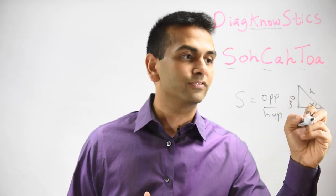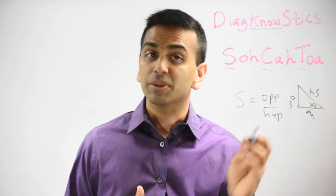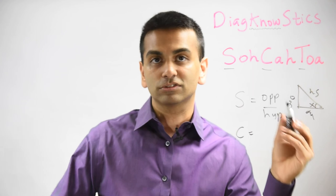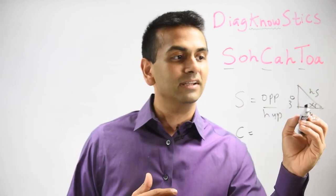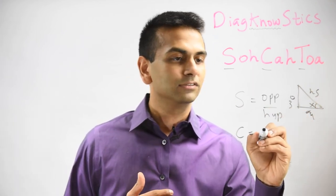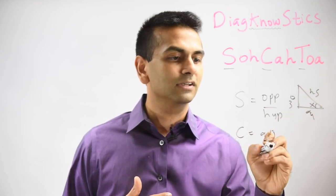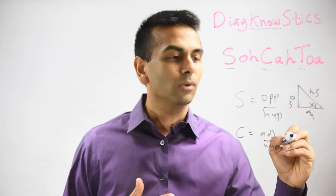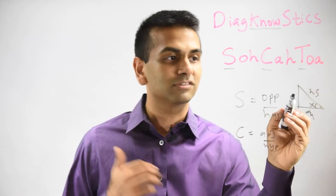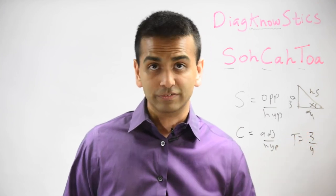So if this was like a three, four, five triangle, the sine of X would simply be three-fifths. The cosine — CAH — so the cosine is the adjacent, which is four, over hypotenuse. So that's just gonna be four-fifths, adjacent over hypotenuse. And finally, the tangent — TOA. Tangent doesn't involve hypotenuse at all; it's just the opposite over adjacent, which is, in this case, three over four.